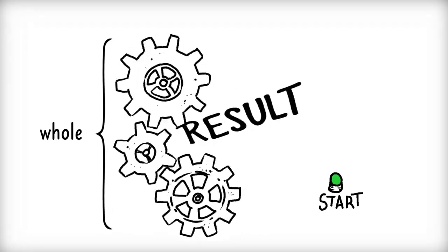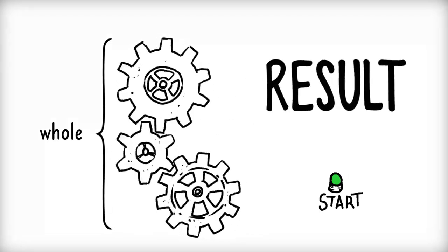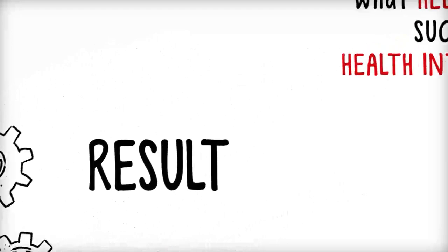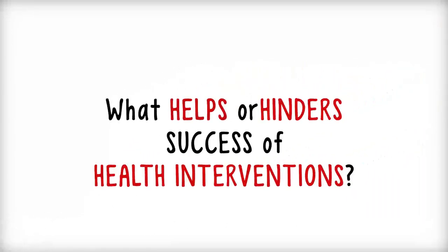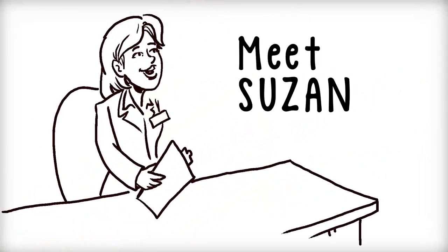which in turn produces some kind of result. Using a systems perspective is important because it helps us to better understand what helps or hinders the success of health interventions. Here's an example.